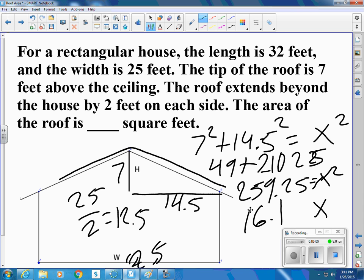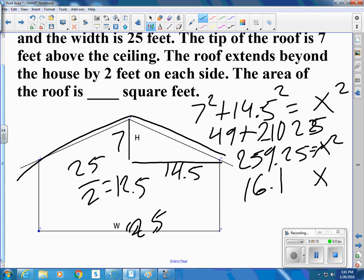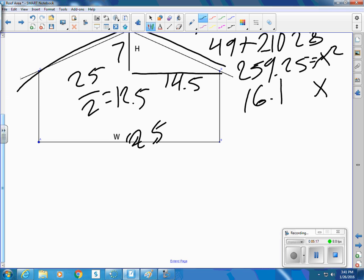Along here and then down there also. So we'll double that. So 16.1 times 2 gives me 32.2 feet.